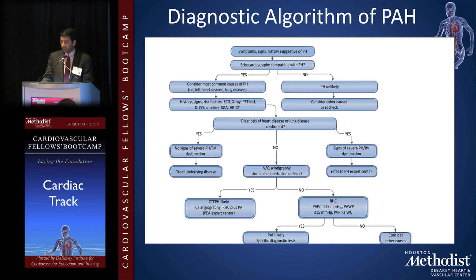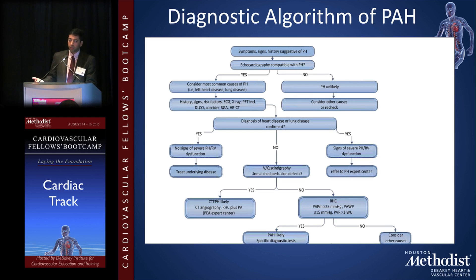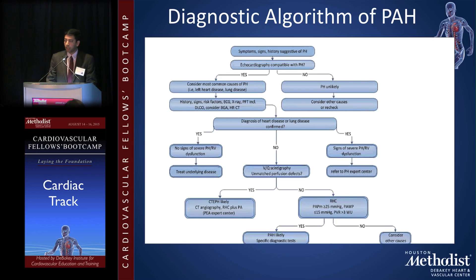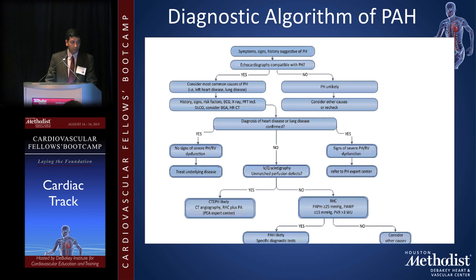Symptoms and signs suggestive of pulmonary hypertension include shortness of breath, fatigue, syncope, presyncope, and right-sided symptoms like abdominal fullness, bloating, and peripheral edema. Echocardiography is your main screening tool — it gives you an estimated pulmonary systolic pressure and lets you assess the right side of the heart. Right atrial enlargement and right-sided dysfunction should raise your suspicion.